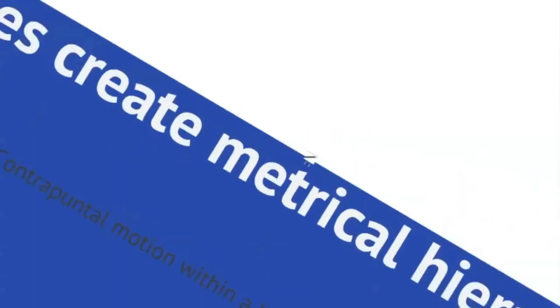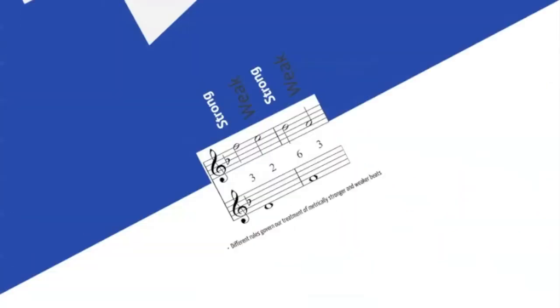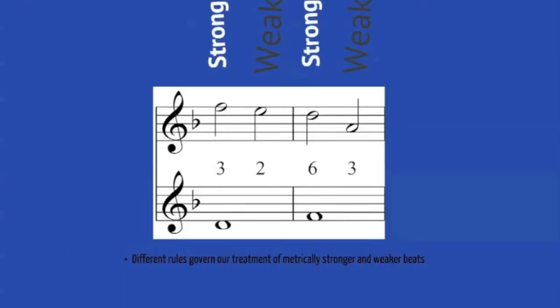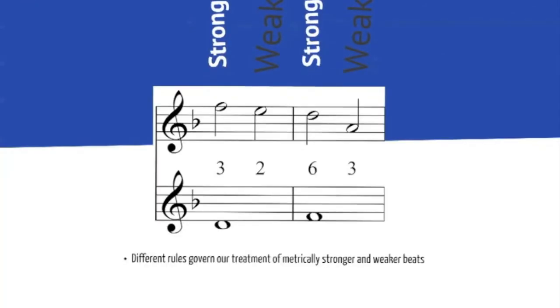And what having half notes against a whole note does is it creates a metrical hierarchy. We now have strong beats and weak beats. And one of the most important things about second species is that different rules govern our treatment of metrically stronger and weaker beats.